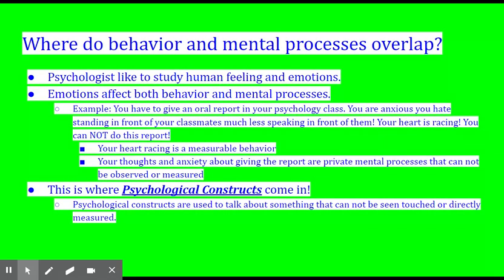There is a time when behavior and mental processes overlap. Psychologists like to study human feelings and emotions. Emotions affect both our behavior and our mental processes. For example, you've got to give a report in your psychology class. You get anxious, you don't like standing in front of your classmates. Your heart's racing and you've got so much anxiety. Your heart racing — that's measurable behavior. We can tell that based off of looking at your smartwatch and seeing that your heart rate is up above 120. However, your thoughts and anxiety about giving the report — that's a private mental process that can't be observed or measured, unless you tell me.